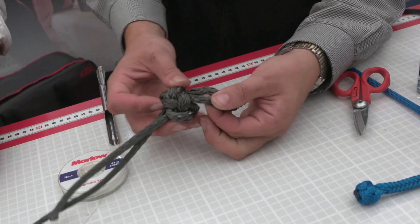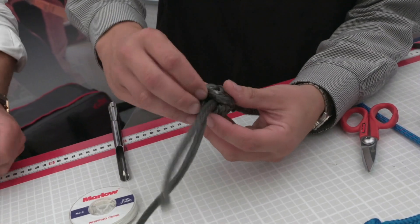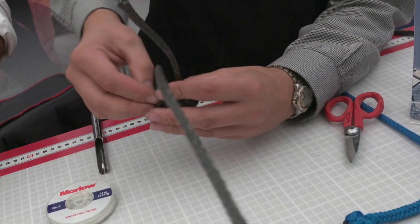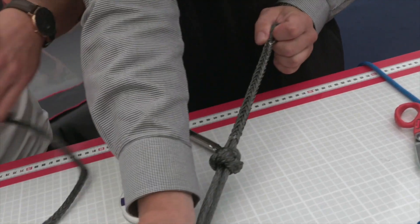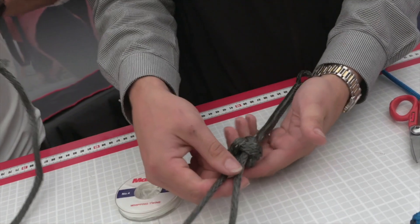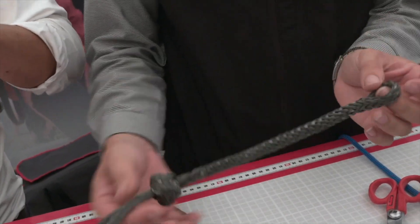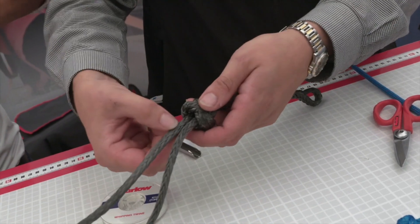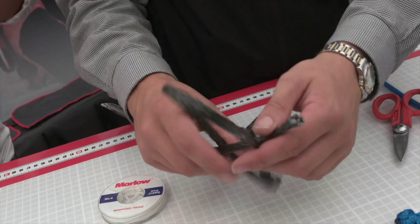And then it's just a case of working the slack through the rope, and this can take some time. Just work it round and get the knot as tight as you can. So once you've got your knot nice and tight, you want to make sure that when it goes under load, it's not going to pull apart by the knot contracting more and these ends slipping through. So we need to try and get it as tight as possible.